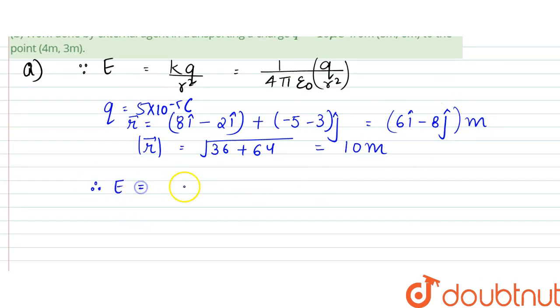Therefore, electric field can be written as k is 9 into 10 to the power 9 into 5 into 10 to the power minus 5 q by r squared. So it would be 10 squared, that is 100. This value turns out to be approximately equal to 4500 volt per meter.